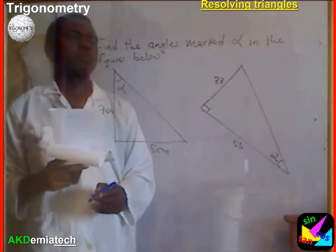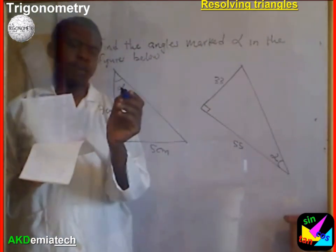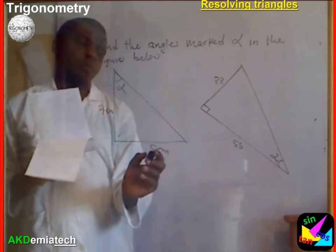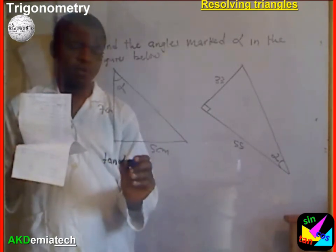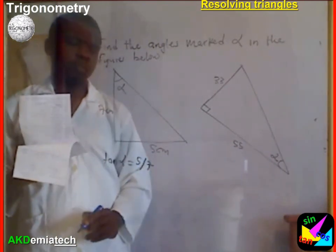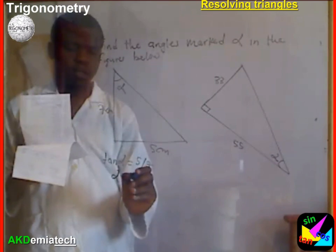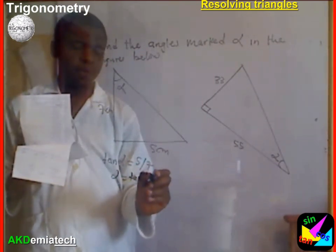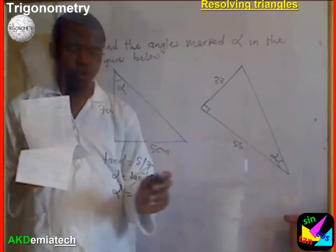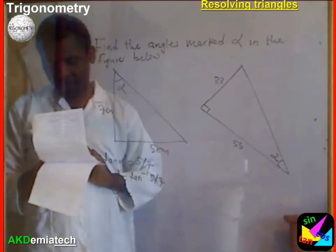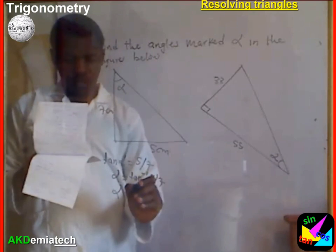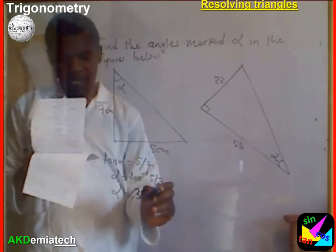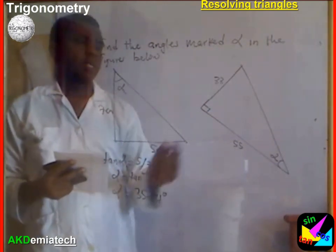Find the angles marked alpha in the figures below. This is alpha here — I know the opposite and the adjacent — so tan alpha equals 5 over 7. Alpha is the arctangent, so tan inverse of 5 over 7. Punching it on the calculator, 5 divided by 7 gives us 35.54 degrees.